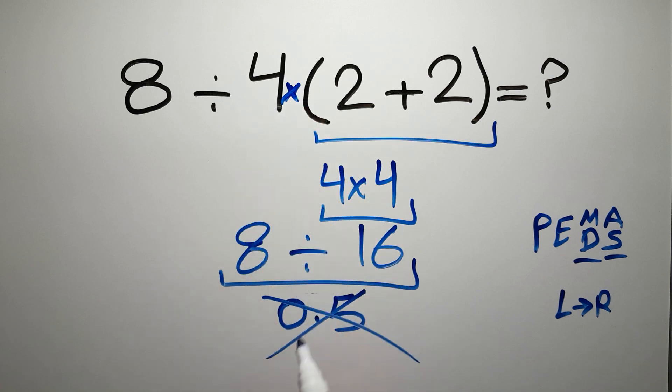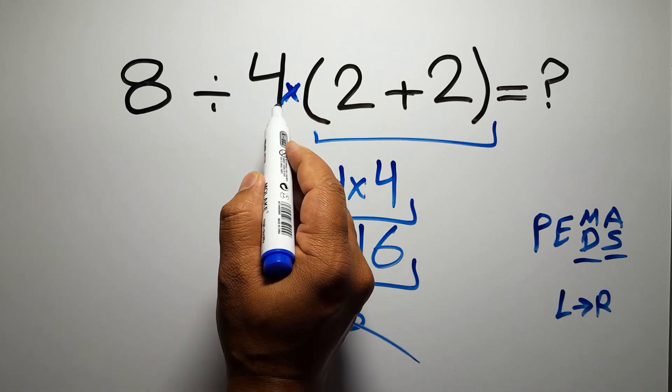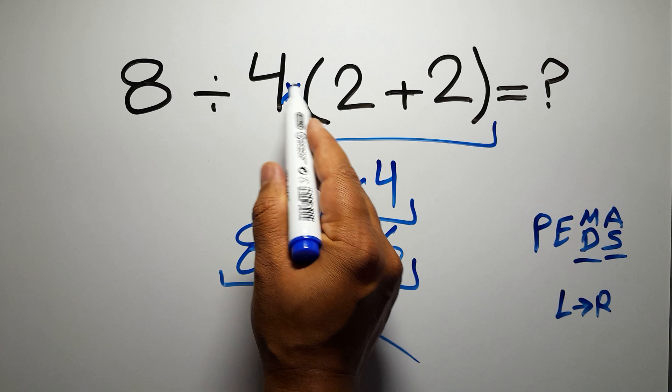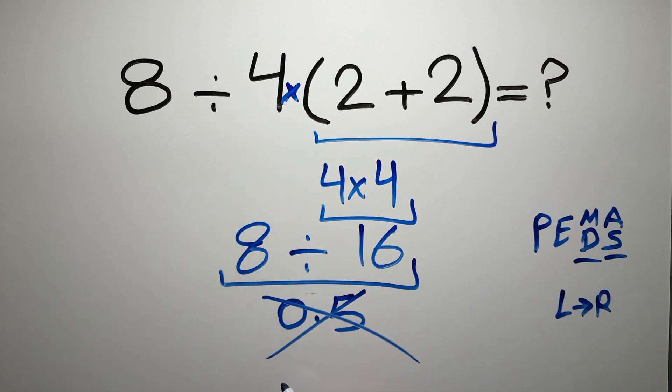Here we have a multiplication, because in mathematics, when a number is placed next to parentheses, it means multiplication. And we usually don't write the multiplication sign for brevity.